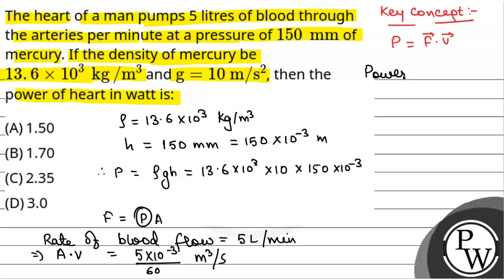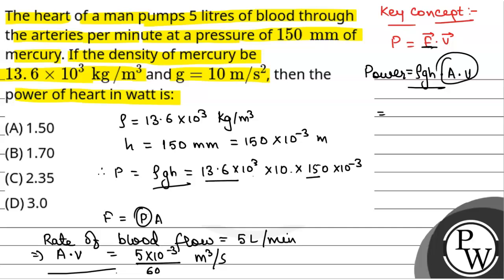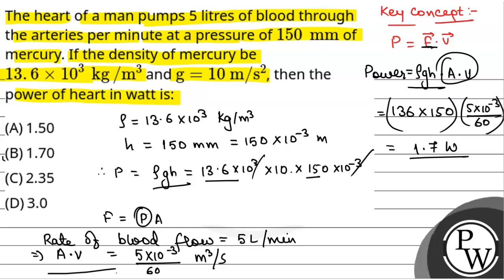This P is for power and this P is for pressure. So power will be equal to force into velocity. Force is P into A and P is ρgh. So this will be ρgh × A × v. Now A × v is 5 × 10⁻³ by 60. So we combine this: ρgh gives 13.6 × 150 — the 10³ and 10⁻³ cancel — so this will be 136 × 150, multiplied by 5 × 10⁻³ by 60. On solving this we get 1.70 watt. So power is 1.70 watt.